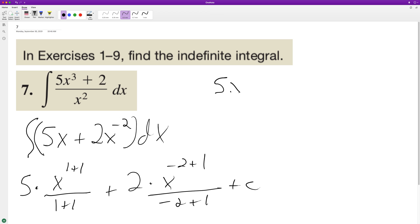All right. So we have five X squared over two plus, and actually this is divided by negative two plus one. So that's minus X raised to the negative one. I don't know why I have a two. So that's negative one down there. Yeah, so there is a two here, and then plus C.